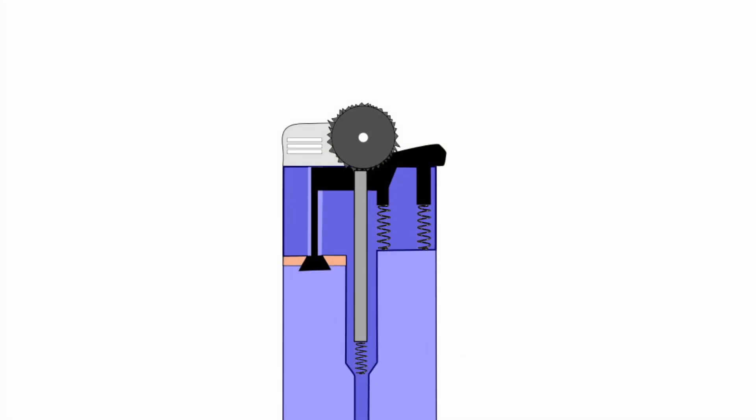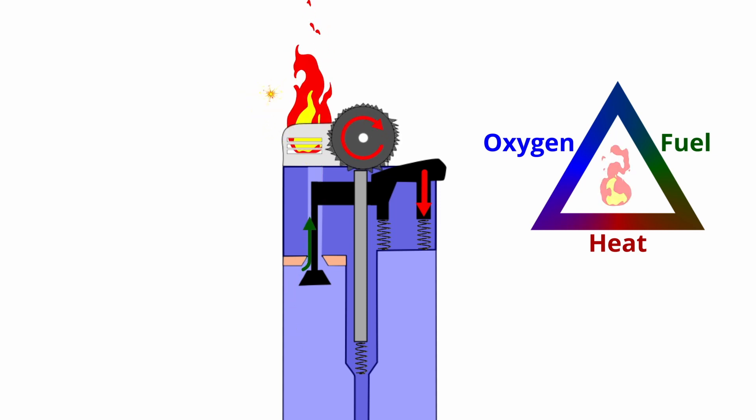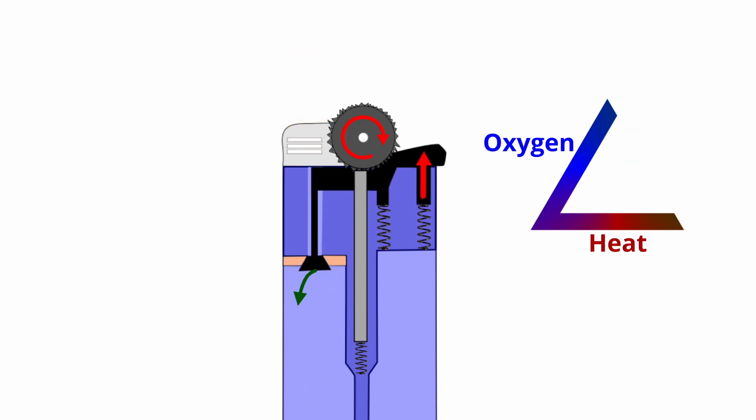At the same time that the roller is being spun, a button is pressed. This opens the valve allowing the butane to be released. At this point, all three elements required for the fire are present. The butane fuel is mixed with the oxygen in the air, and the heat is provided by the sparks of ferricium. So the lighter stays on until the button is released, which closes the valve controlling the release of butane. This shuts off the fuel, cutting out the flame.